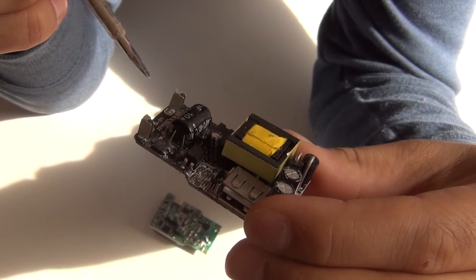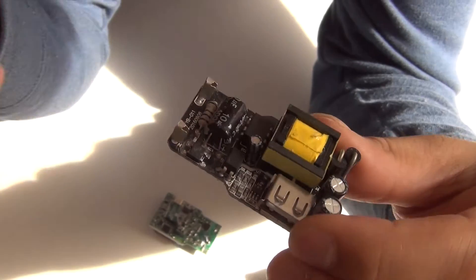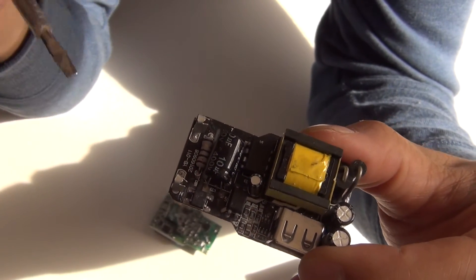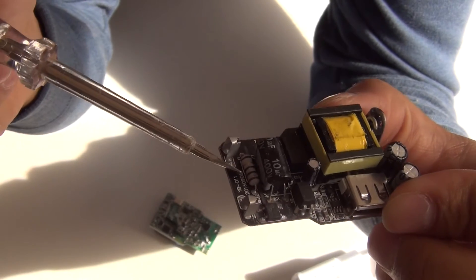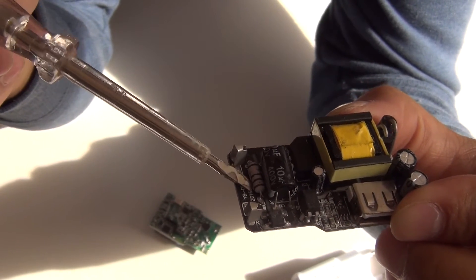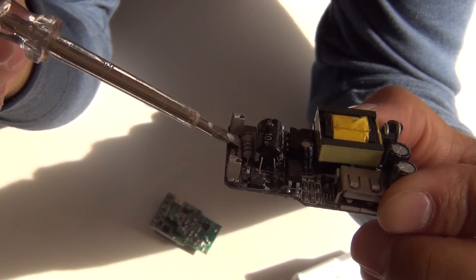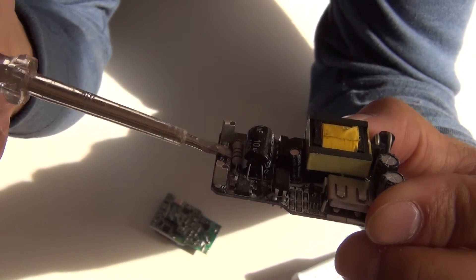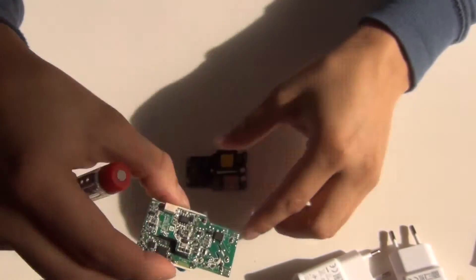Actually, there is no fuse in these fake chargers. They just use a cheap resistor that should act as a fuse, whereas the Samsung original charger you see no corrosion.